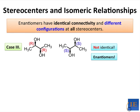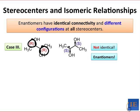Enantiomers have identical connectivity and different configurations at every stereo center. Looking at case three, these two molecules are enantiomers of one another. They have the same connectivity, but they differ at every single stereo center. They're not identical, and they're enantiomers of each other.